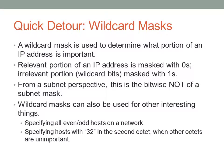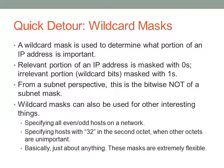Wildcard masks can be used for interesting things — for example, you could specify even or odd hosts on the network, or specify hosts that are only 32 in the second octet and ignore all other octets. You can do almost anything with wildcard masks because they do not require contiguous ones. Unlike a subnet mask, which requires a continuous set of ones followed by zeros, with wildcard masks you can put the zeros and ones wherever you want. The ones are the unimportant bits not matched against anything, and the zeros are the important bits matched against whatever the access list entry specifies.